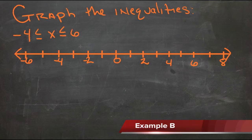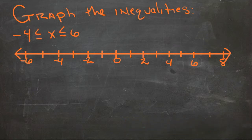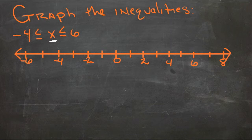The trick to graphing compound inequalities is to recall that we're graphing what X can be. As long as the only things we mark are numbers that X is qualified to be, it should be pretty simple. Here, X is greater than or equal to negative 4, so we start at negative 4 with a filled circle and shade to the right.